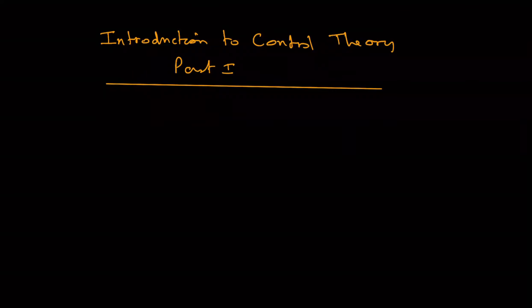Welcome everyone. This is part one of an introduction to control theory. This is in two parts: the first part considers an uncontrolled system, and the second part considers a system with negative feedback. A lot of control theory uses advanced math, but I'm going to show you in these two parts that you don't need advanced math to do some level of control theory. It'll give you an insight into the kinds of things we ask and the kinds of results we get.